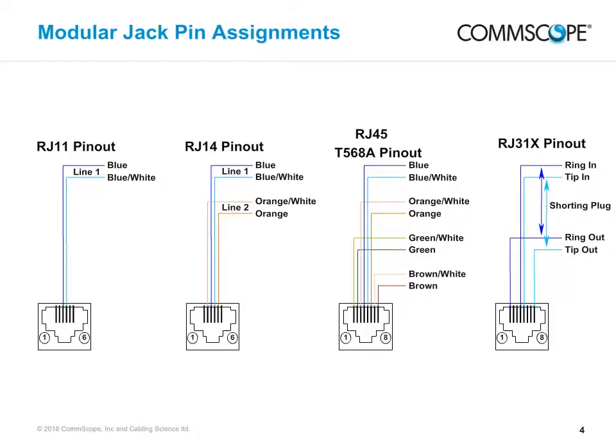Over the years, the common usage of the RJ designations has come to have slightly different meanings than the original RJ specifications. The following describes the four common jack definitions used today, adequate and useful for describing jacks and pinouts in the MDU system. Pins or contacts are numbered starting with 1 on the left side looking into the jack with the contacts up and release tab down. The RJ11 jack has space for six connections, three pairs, but only the center pair, pins 3 and 4, is connected to line 1. This is commonly used for a standard one-line telephone connection between the outlet and the phone.